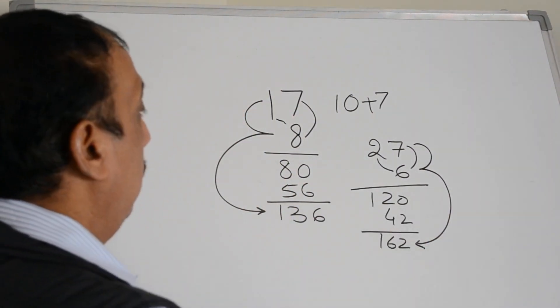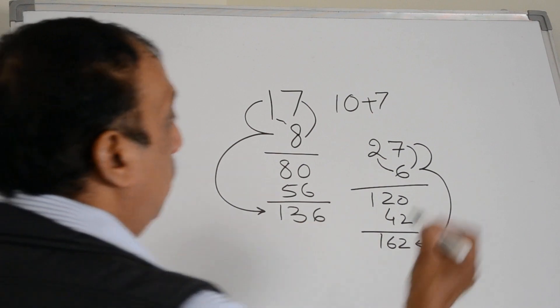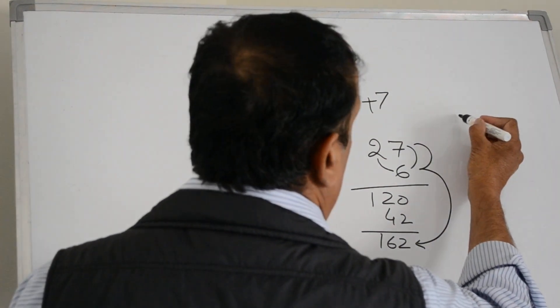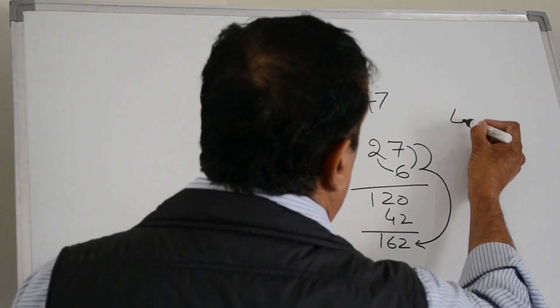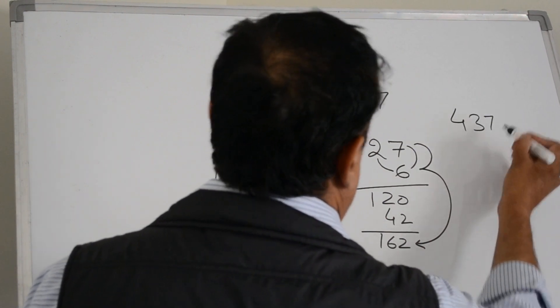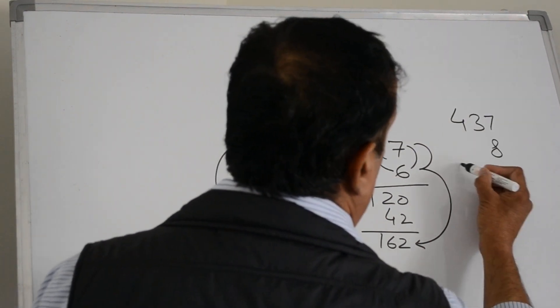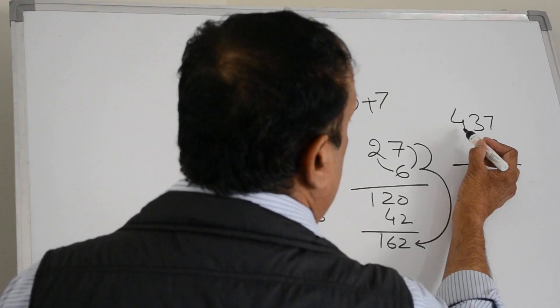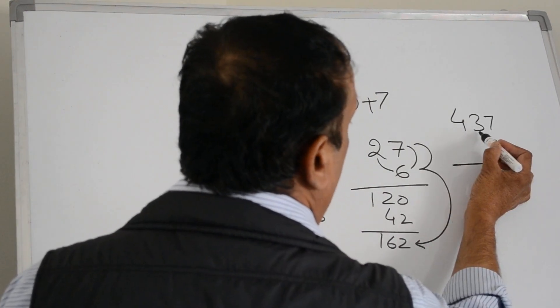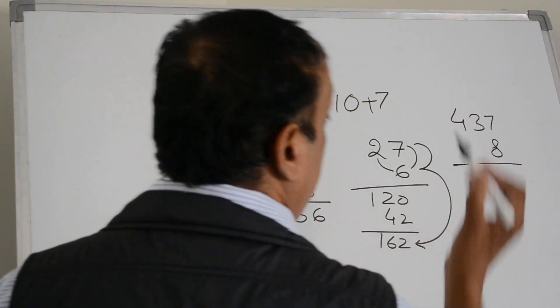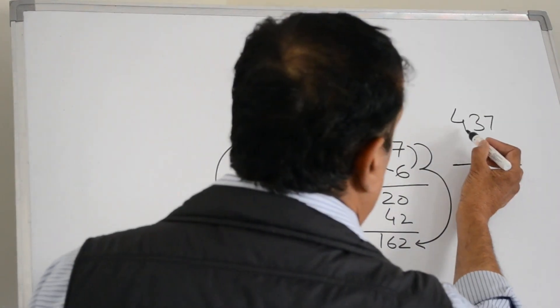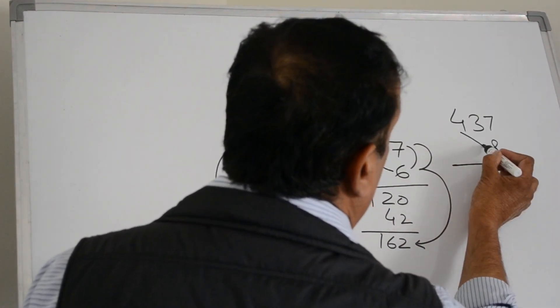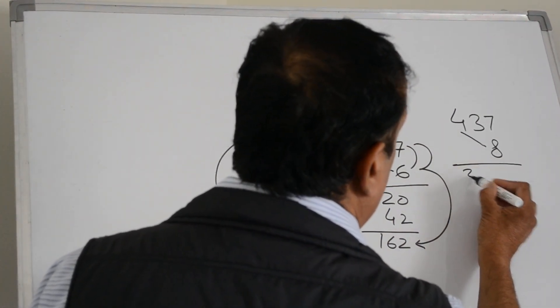We can extend this formula beyond this. Suppose we want to know how much 437 eights are. Here it is 400, it is 30, it is 7. So first multiply 400 by 8 getting 3200.